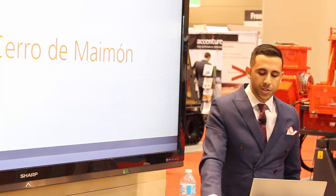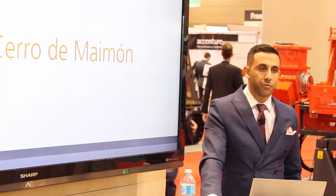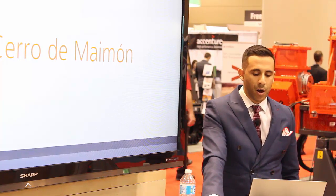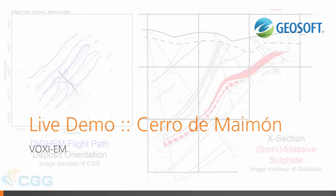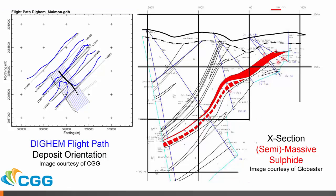I will now present a brief example of inversion with Voxi EM using frequency domain data acquired over the Cerro de Maimon copper-gold mine in the Dominican Republic. The deposit is a typical volcanic-hosted massive sulfide body. The DIGIM data was kindly provided by CGG. The deposit itself is a sheet-like structure shown in red, with the top approximately 30 meters below the surface, dipping about 40 degrees to the southwest. The thickest part of the deposit is about 75 meters deep, and the deposit is oriented roughly perpendicular to the survey lines.